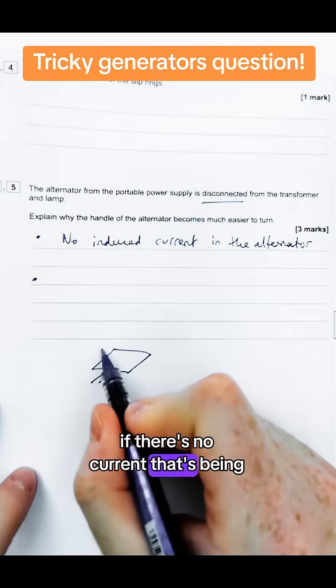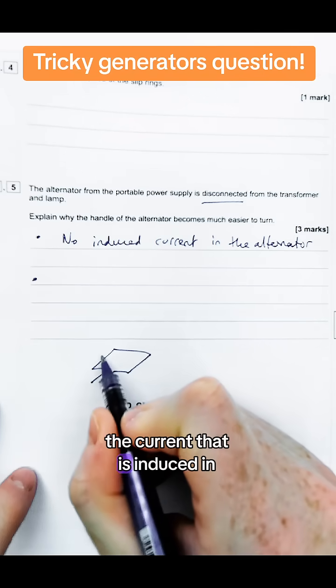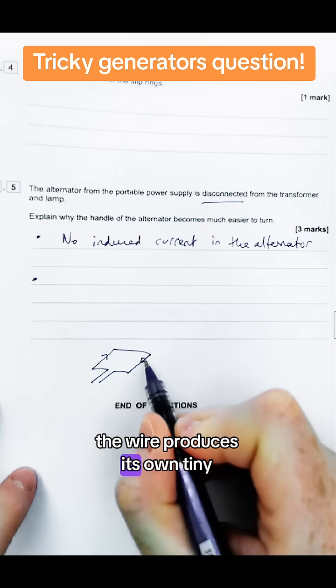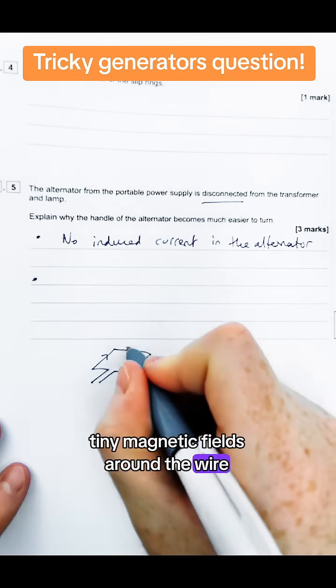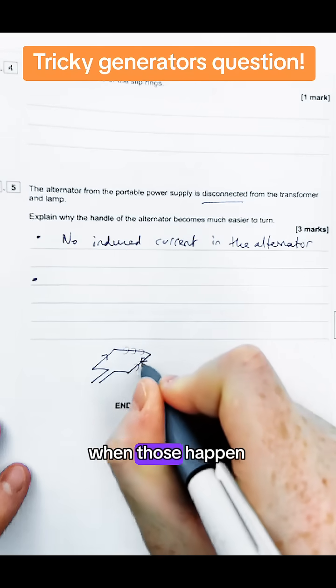The current that is induced in the wire produces its own tiny tiny tiny magnetic fields around the wire like this. Now when those happen, that then causes there to be a force which opposes the motion that is turning the thing in the first place.